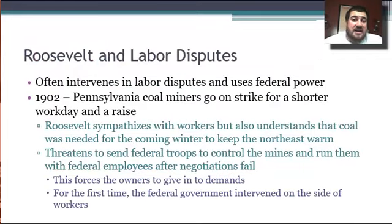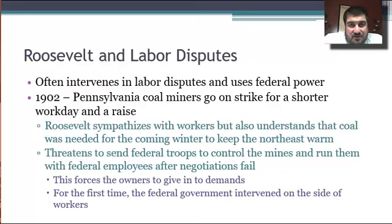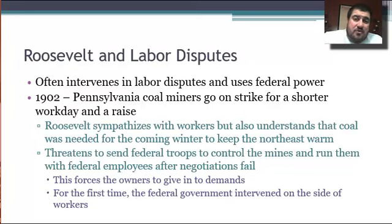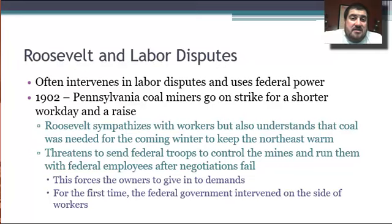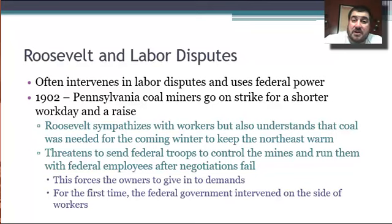Roosevelt intervenes with federal power on the side of laborers in labor disputes. In 1902, he had to deal with the anthracite crisis where coal miners were going to go on strike. He sympathizes with the workers, but understands we need coal for the coming winter to keep everybody in the Northeast warm, or else businesses would shut down and people would freeze to death. He talks to the coal mine owners and they refuse to budge, so he threatens to send in federal troops to control the mines, which forces the owners to give in to the workers' demands. For the first time during industrialization, the federal government intervened on the side of workers.